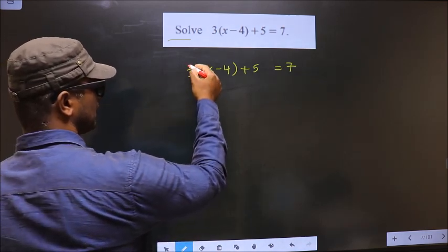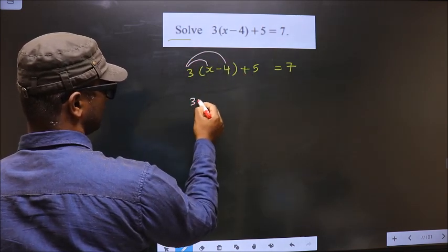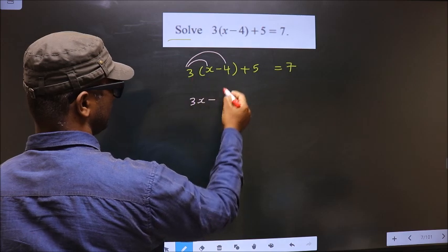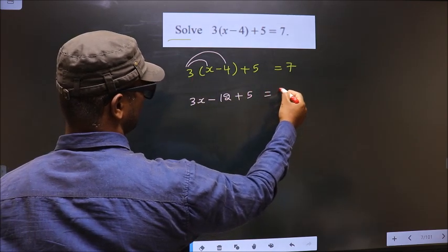First, we should open up the bracket in this way. That is 3 into x, 3x, minus 3 into 4, 12, plus 5 equals 7.